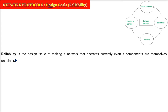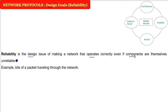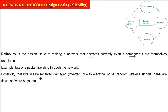Reliability is the basic and very important issue when making a network. It is all about the network working correctly and recovering correctly, even if the components themselves are unreliable. When sending packets - which are combinations of bits - bits may change, bits may be lost, and packets may be lost.